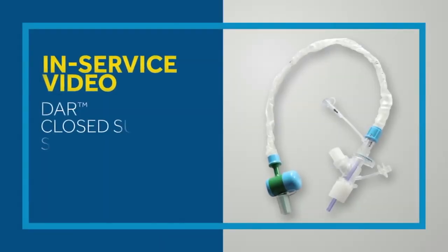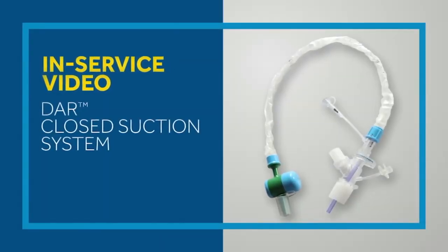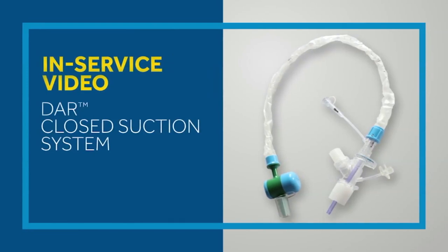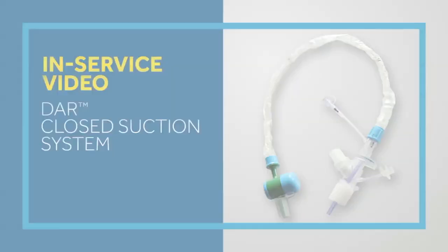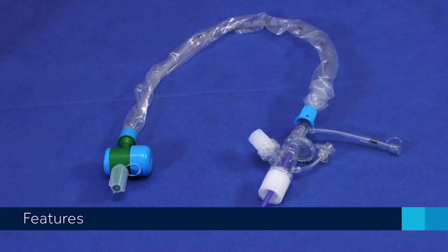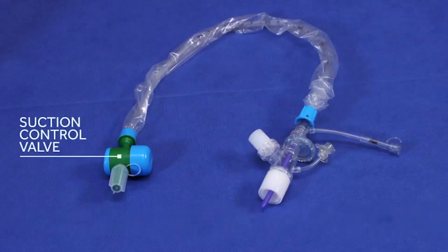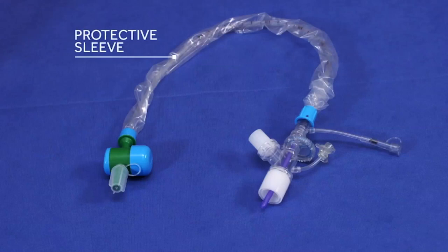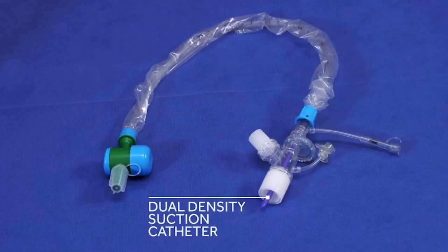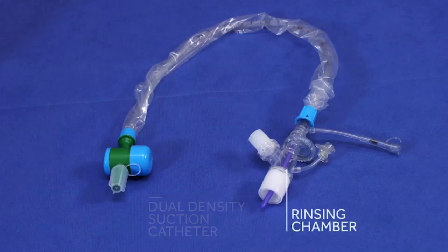The DAR closed suction system is a versatile and easy to use system for oral and endotracheal tube suctioning. The DAR closed suction catheter features a twist open suction control valve with ISO color coding for immediate catheter size recognition, a clear and resistant protective sleeve, an atraumatic dual density suction catheter, a rinsing chamber, a rinsing port with one-way valve.